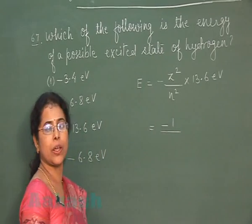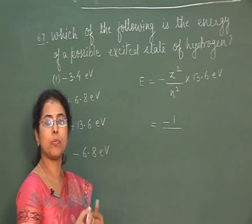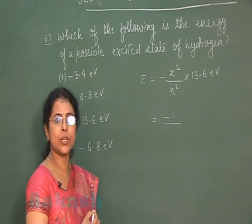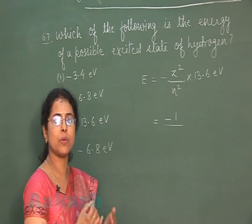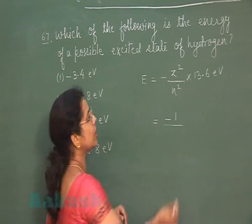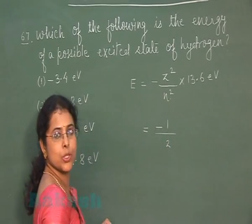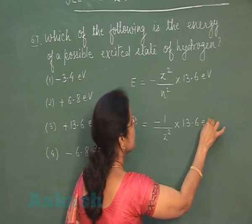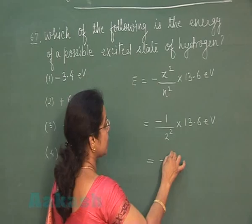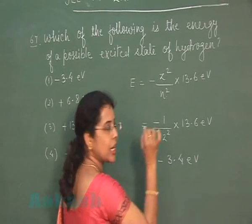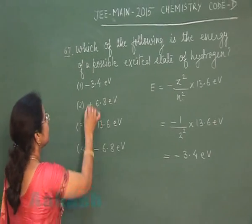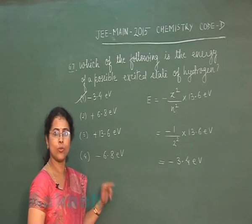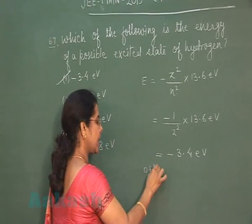Here n is the orbit number. The first orbit is the ground state, so excited states correspond to n = 2, 3, 4, etc. Putting n = 2: E = -(1/4) × 13.6 = -3.4 eV. Looking at the options, the first option has the value -3.4 eV, so the first option is the correct answer.